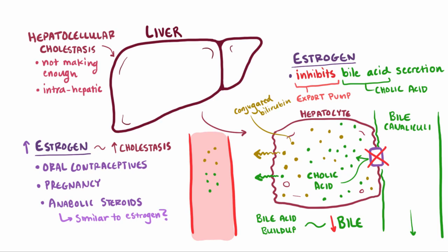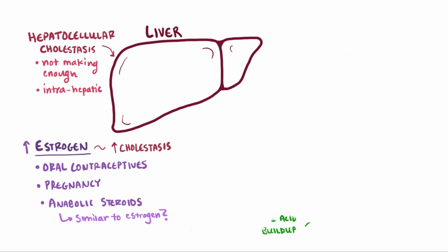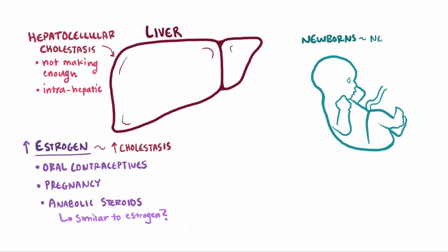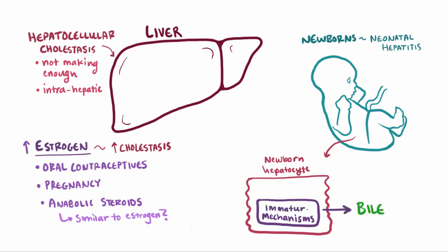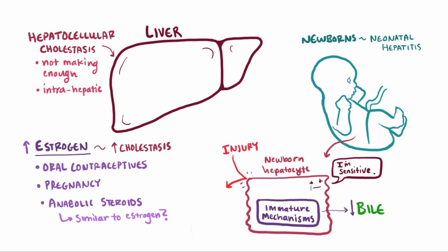Another hepatocellular mechanism for cholestasis is related to newborns and is associated with neonatal hepatitis. In newborns, it's thought that several of the important mechanisms that help produce bile in hepatocytes are relatively immature, leading to an overall decreased ability to produce bile. This, in combination with the developing liver being more sensitive to injury, can lead to a reduction in bile synthesis and bile flow for newborns.